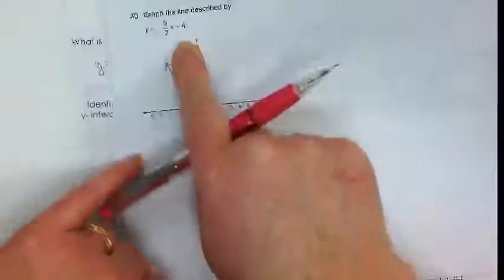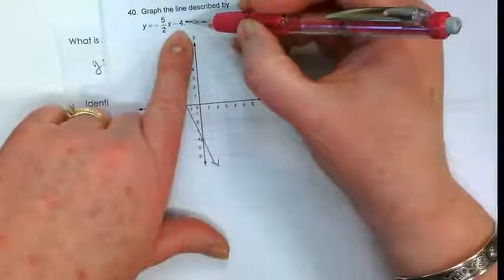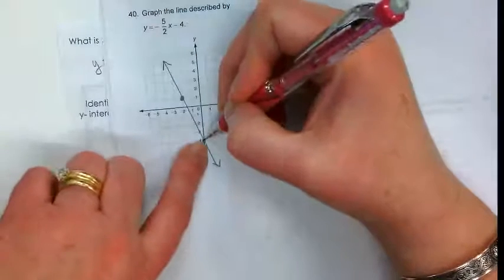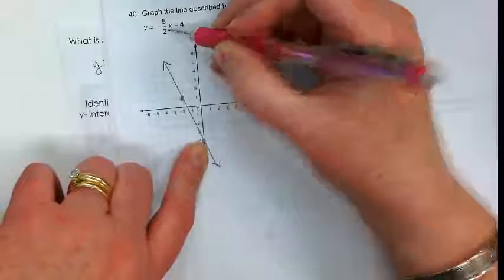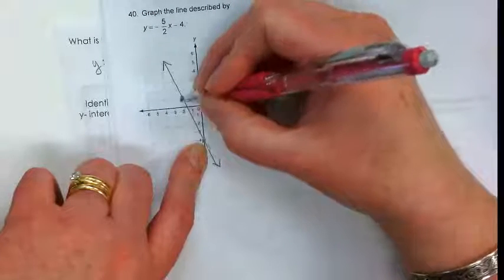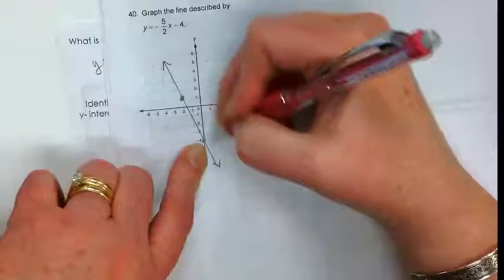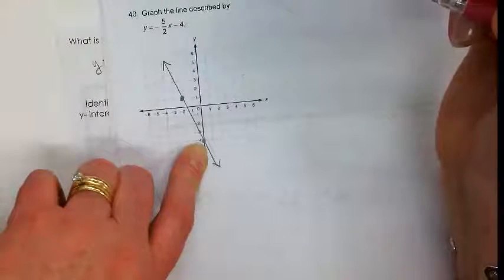Number 40 is taking this equation and making the line. Starting with negative 4, we would make our first point there. The slope is negative 5 over 2. So I'm going to run up 2, and because it's negative, I want to turn left, because that's going to make my line go negative. See how you use those pieces?